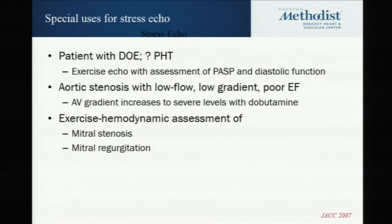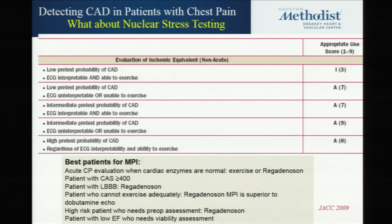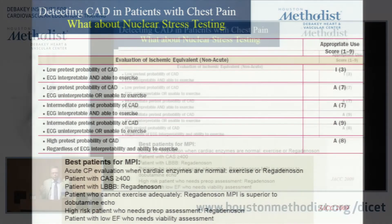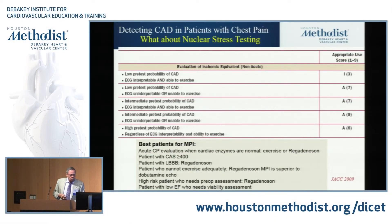MPI is very similar. For nuclear, same story — best patients exercise. We do a lot of nuclears in acute chest pain when we put patients in the chest pain units; very helpful. Patient with left bundle branch block, we've talked about. Patient with a very high calcium score, you can do either nuclear or stress echo. Regadenosone is a very good test for those who can't exercise. High-risk patient for preoperative assessment: regadenosone or dobutamine stress echo. I'm biased more towards regadenosone — I don't like dobutamine too much because of arrhythmia issues, but both are recommended. With low EF, nuclear can also be used for viability. We're also doing a lot of cardiac MRI at this time for that.